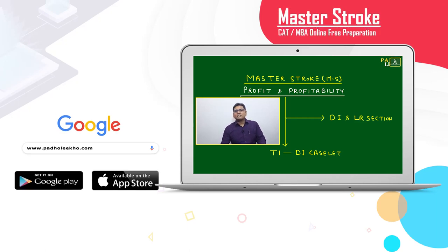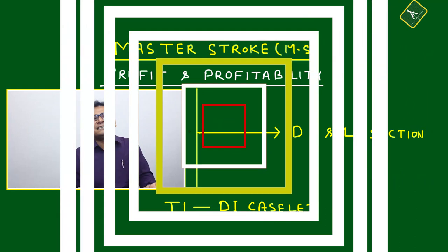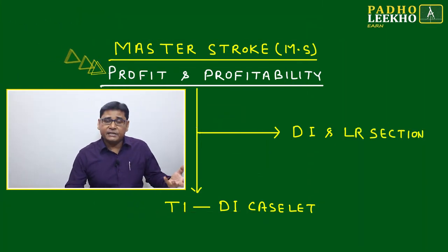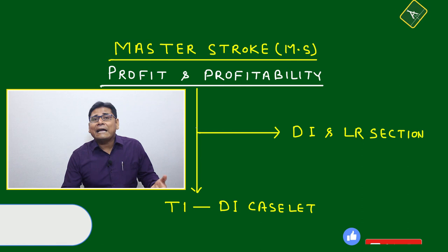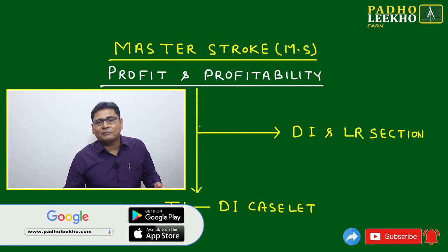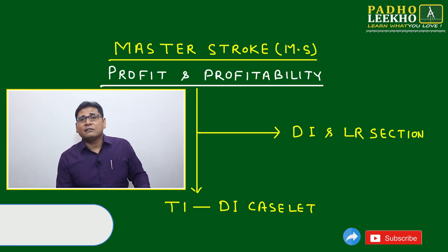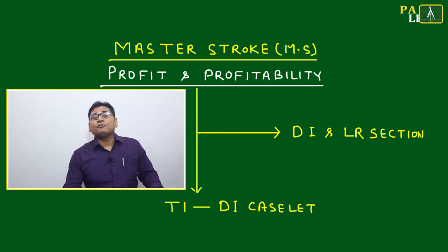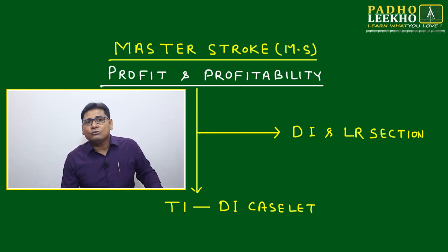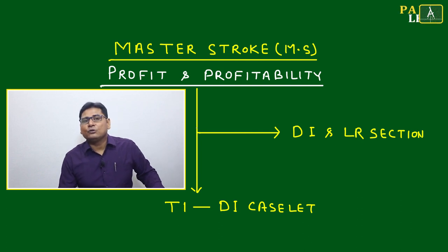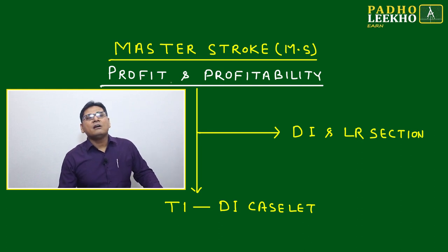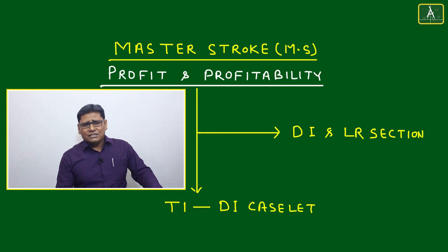Welcome to the session of Masterstroke. This Masterstroke is related to data interpretation, and we are going to discuss one of the small measurements of business, called profit and profitability. Profit and profitability will drive whether any business is going in the right direction or not. If you are able to make profit, then your ideas are fruitful. If not, the business is not in good direction — this is one important parameter of business success.